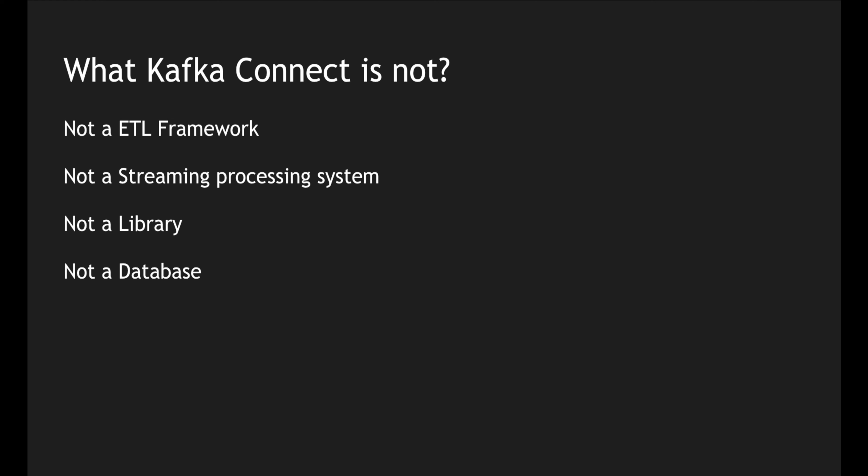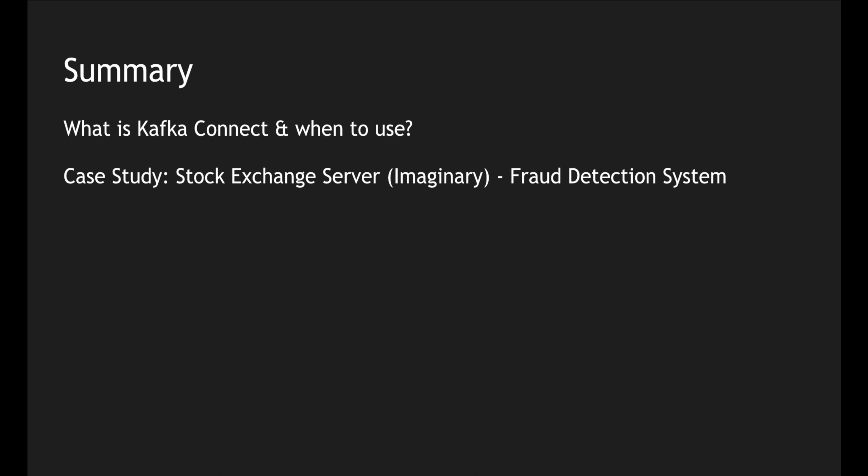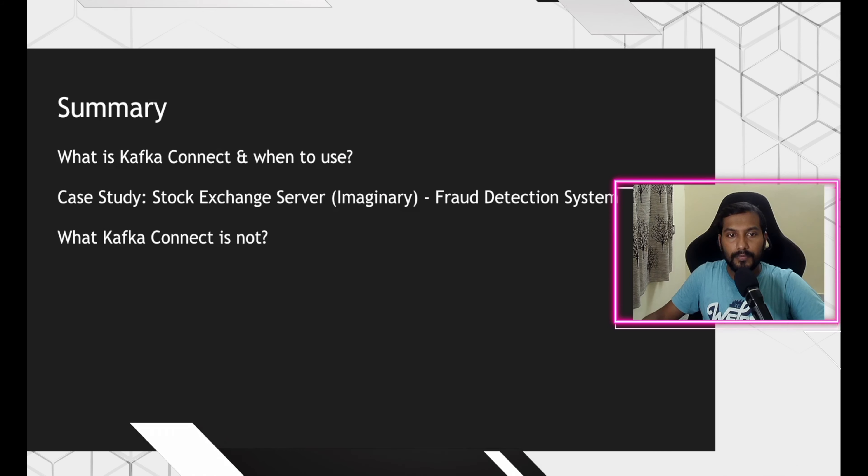To summarize: we initially saw what Kafka Connect is and how you can use it to integrate between different data sources, creating a centralized data hub for integrations with databases, key-value stores, file systems, etc. We also looked at a case study on building a fraud detection system — taking messages from different systems, loading them into a Kafka topic, and branching into a Kafka Connect sink for a data warehouse and a stream processing system to identify fraud.